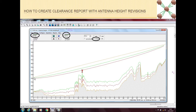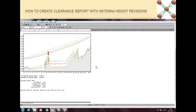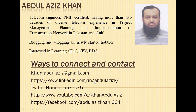Here we put a larger value from our side — 40 and 40 — and then we run the clearance report again. Now as you can see from this picture, both Fresnel zones are very clear. In the report there is nothing flagged, which means both criteria are fully clear. This clearance report has no issues and we can submit it to the customer.